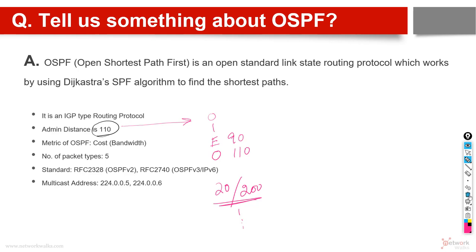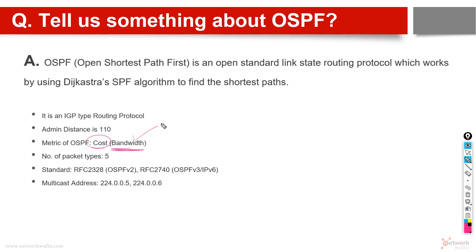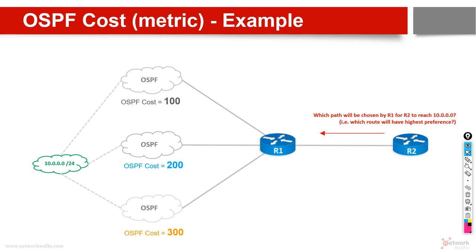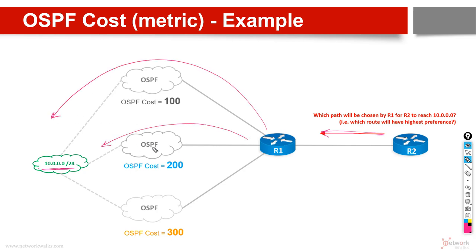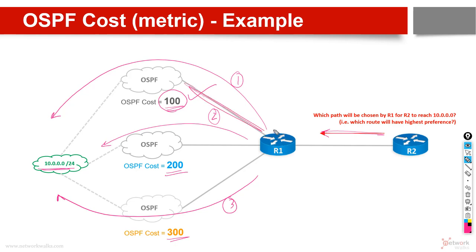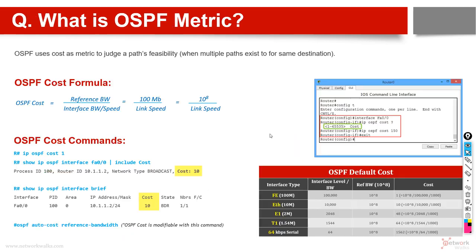The metric of OSPF — interviewers might ask how OSPF selects its best path. It selects based on cost, which is inversely proportional to bandwidth. Wherever there is more bandwidth or less cost, OSPF will select that path when it has multiple routes to a destination. For example, if router 2 wants to reach the 10.0.0.0 network and there are three paths with costs 100, 200, and 300, OSPF will choose the path with cost 100 because that link has more bandwidth. This is the metric of OSPF.